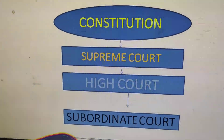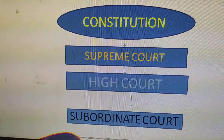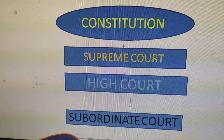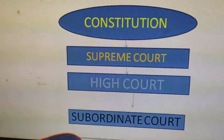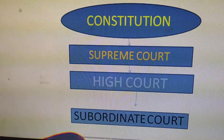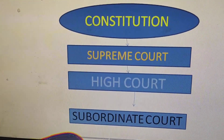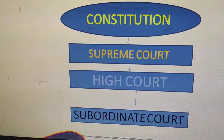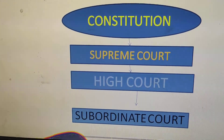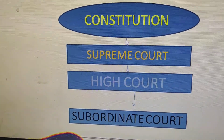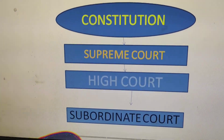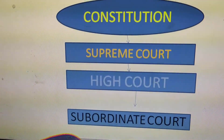This diagram you have to write for the answer — don't forget it, it is very simple. Three courts are there under the constitution: Supreme Court, High Court, and subordinate courts. We will go through each type one by one.